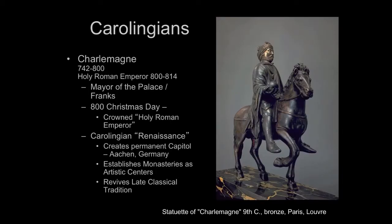The Merovingian royal family quickly gets eclipsed by their own captain of the guard. A character named Charles Martel comes along with the title of Mayor of the Palace — more or less equivalent to Commander-in-Chief of the Armed Forces. Even though he's technically not king, he is the power behind the throne. Increasingly the Frankish Merovingian kings become figureheads, while Charles and his descendants dominate and take control. Many of them are named Charles, and the Latin for Charles is Carolus — so we call this group the Carolingians.